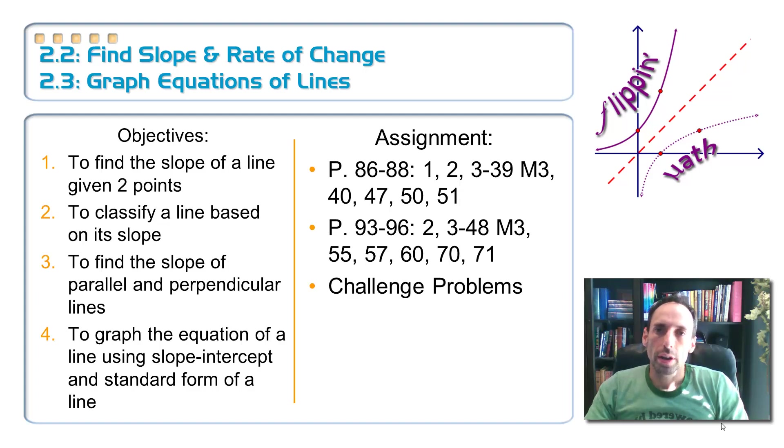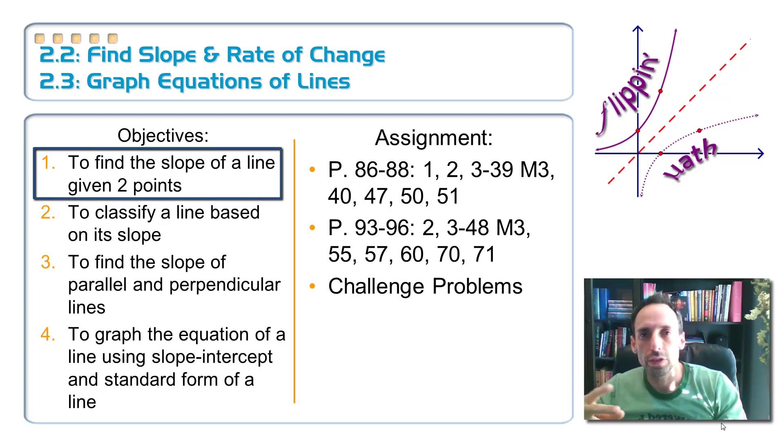Our objectives are plentiful. We've got four of those things. Number one, we're going to be finding the slope of a line given two points, something that's pretty easy, something you did last year in geometry. You did it in Algebra 1. You're going to do it here again.